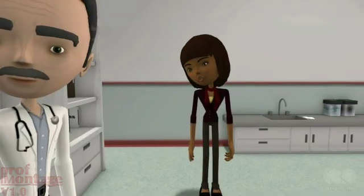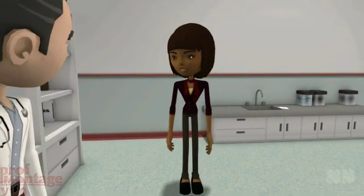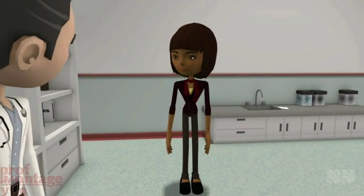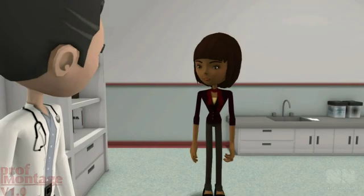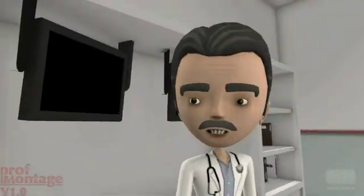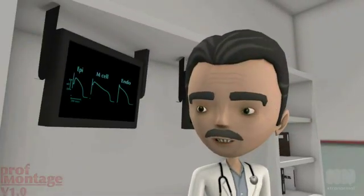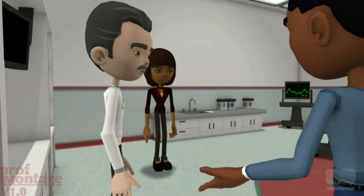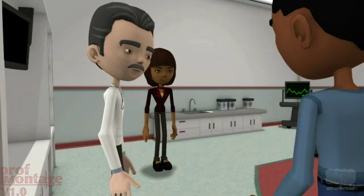How does long QT do this? The QT is long because the action potential is prolonged. Also, there's a difference between the cells in the subendocardium, mid-myocardium and epicardium, and this sets up a gradient across the LV. This is the substrate for re-entry.